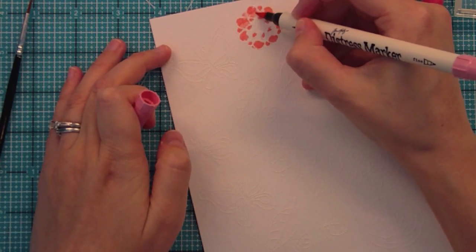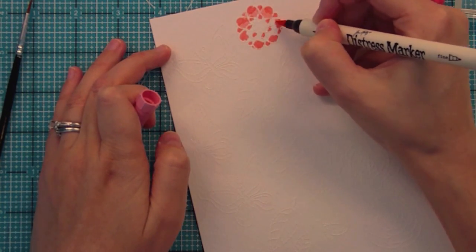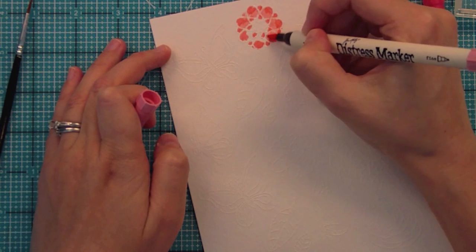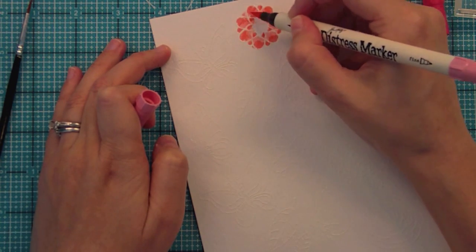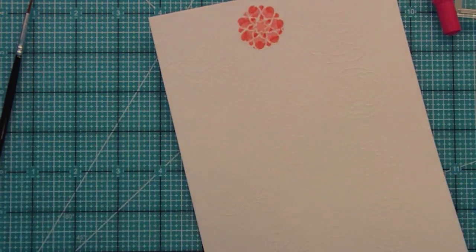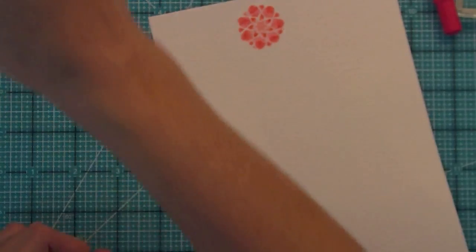Right here I went ahead and did the darker pink all around the outside edges of the petals and then I'm just coloring in with the lighter pink and you're going to see it looks super messy but it's okay because the water is going to blend it all together. I love that you can just be messy about it and it doesn't matter.